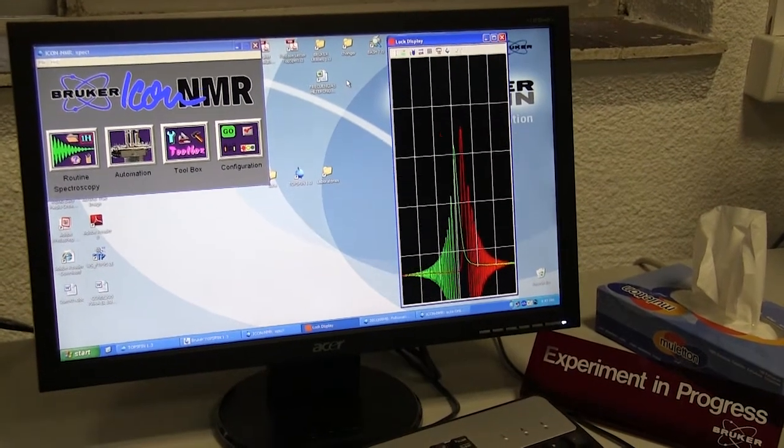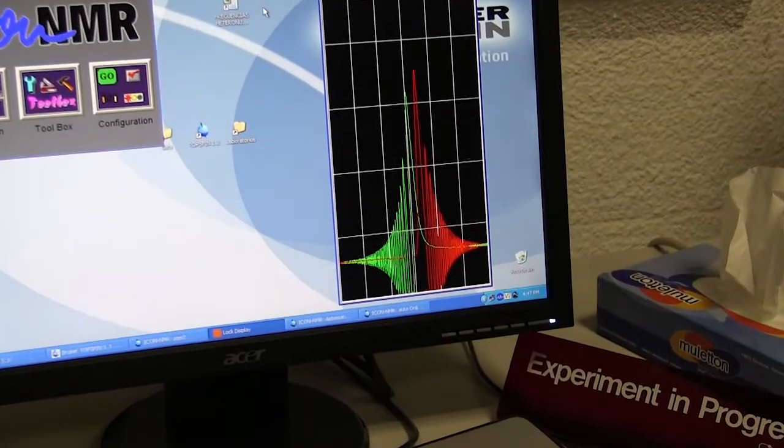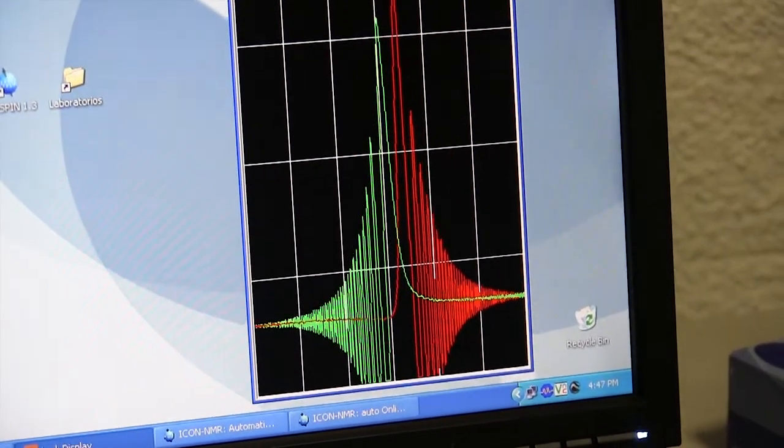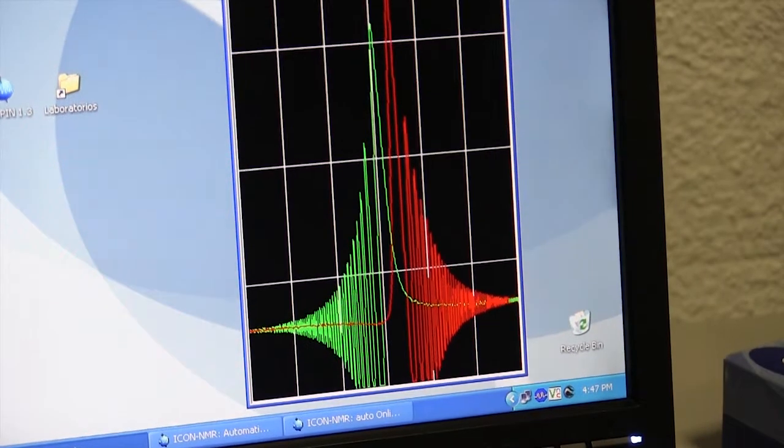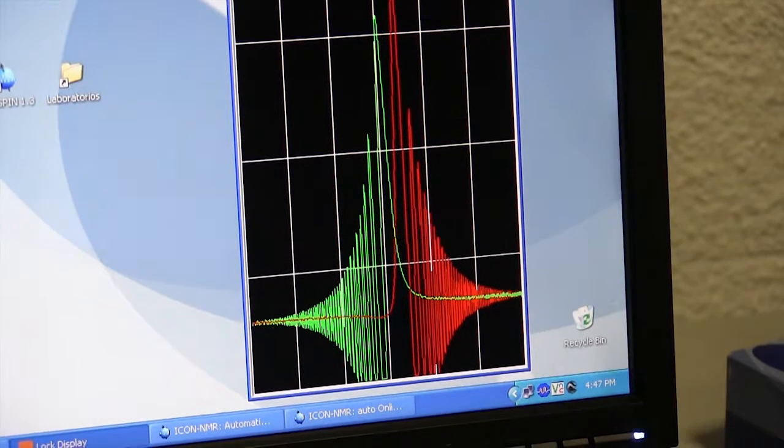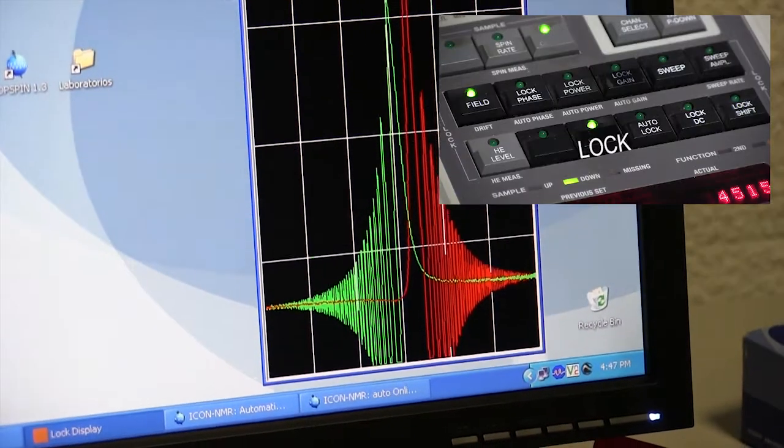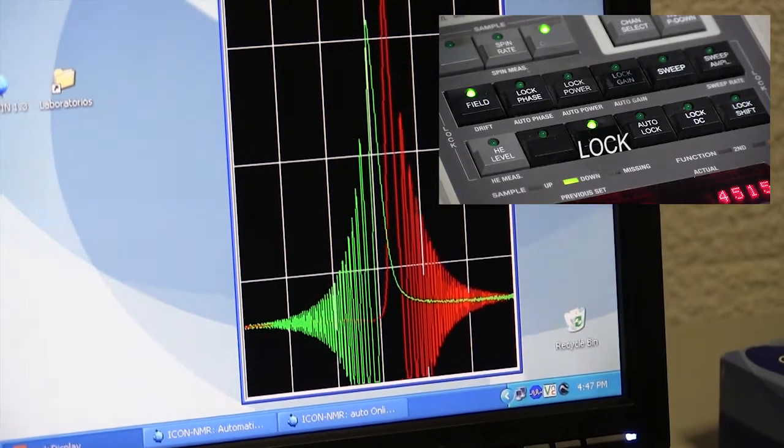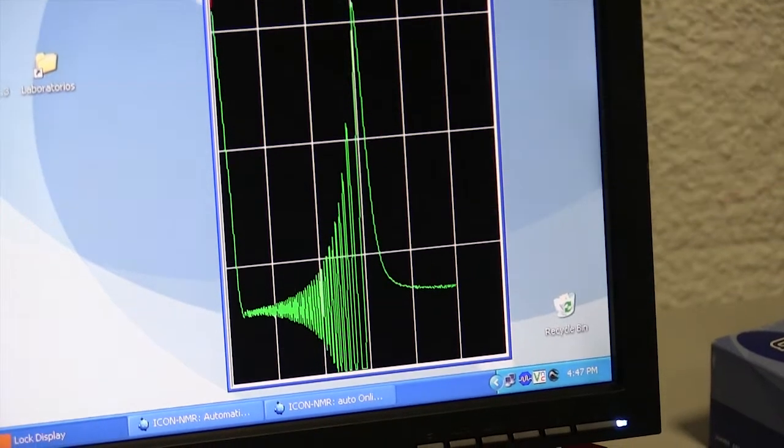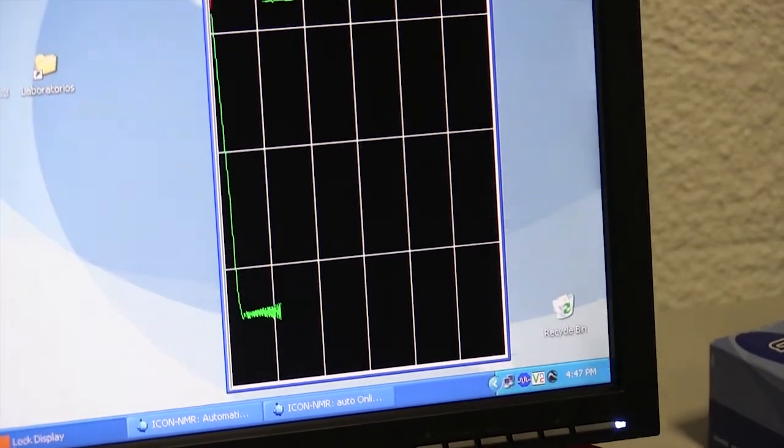Immediately the signal from the deuterons of the solvent is received and analyzed. The radio frequency is thus locked and secured at the appropriate values to perform the right experiment. In this case, a proton NMR spectrum.